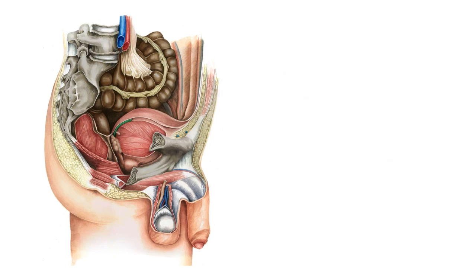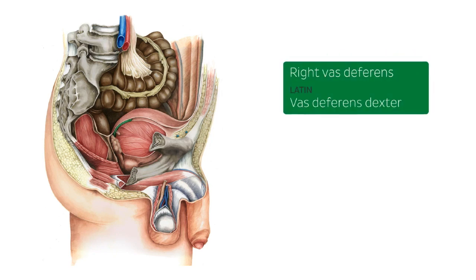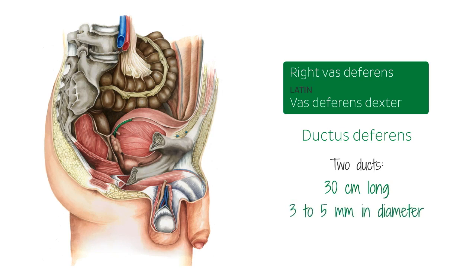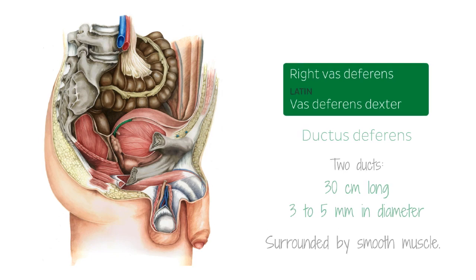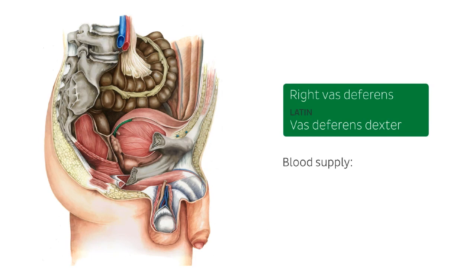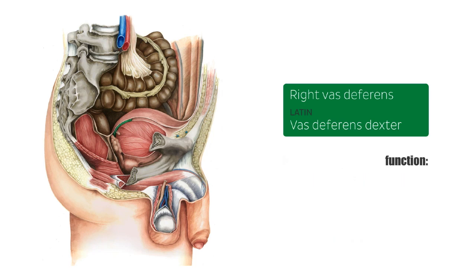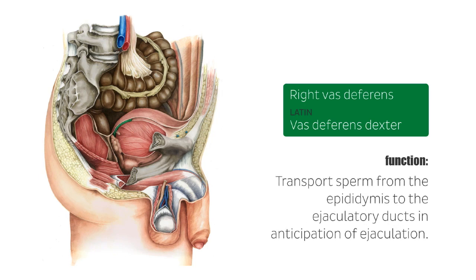The right vas deferens, also referred to as ductus deferens, is now highlighted. There are two, and each tube is about 30 centimeters long and 2 to 5 millimeters in diameter, surrounded by smooth muscle. The vas deferens is supplied by the artery of the vas deferens, which normally arises from the vesicle artery, a branch of the internal iliac artery. Their function is to transport sperm from the epididymis to the ejaculatory ducts in anticipation of ejaculation.